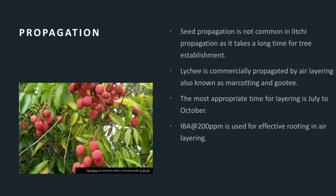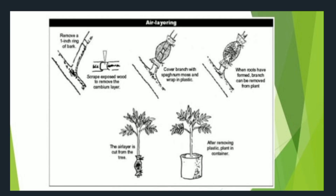Propagation: Seed propagation is not common in lychee as it takes a long time for tree establishment. Lychee is commercially propagated by air layering, also known as marcotting and gootee. The most appropriate time for layering is July to October. IBA at the rate of 200 ppm is used for effective rooting in air layering. Air layering is depicted in this process.